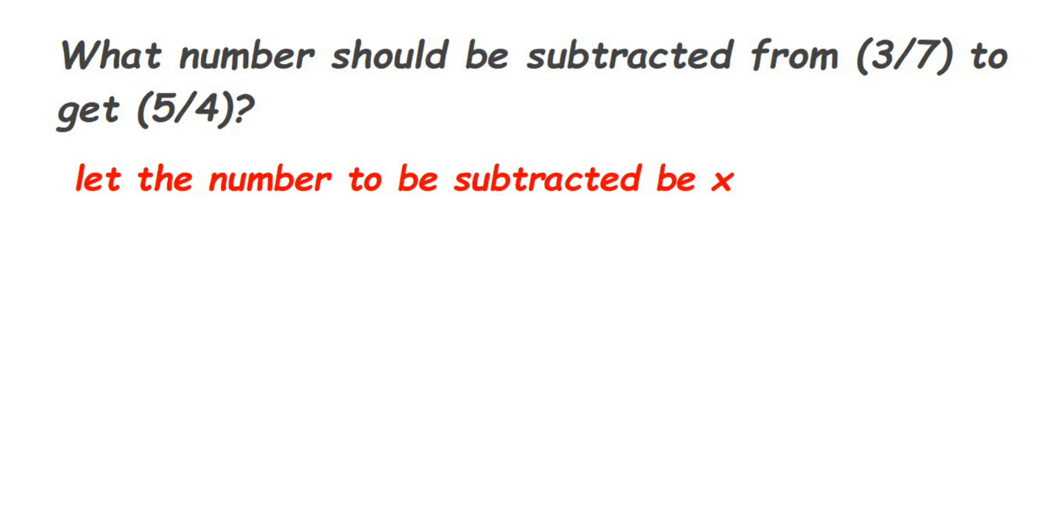Hey everyone, here's a question on rational numbers. The question is: what number should be subtracted from 3/7 to get 5/4? So from 3/7, what should I subtract so that the answer is 5/4?